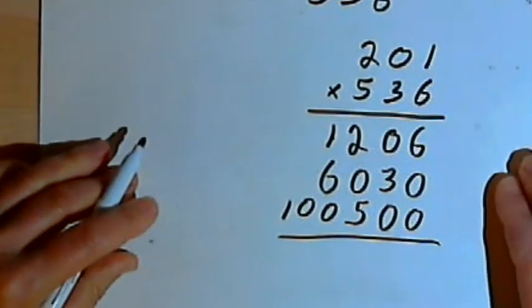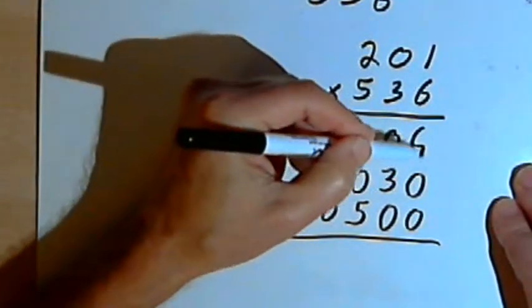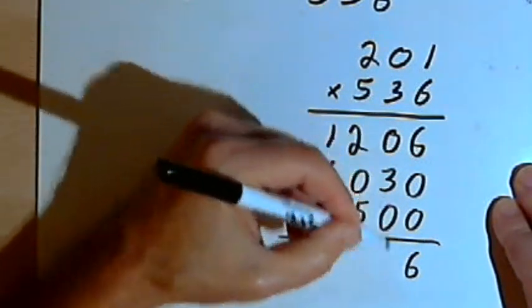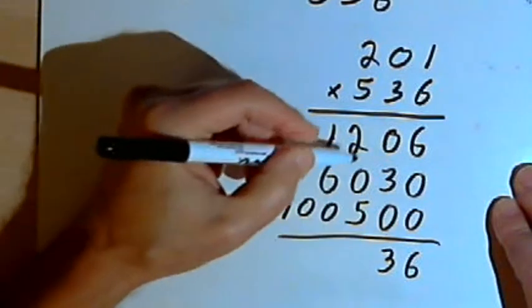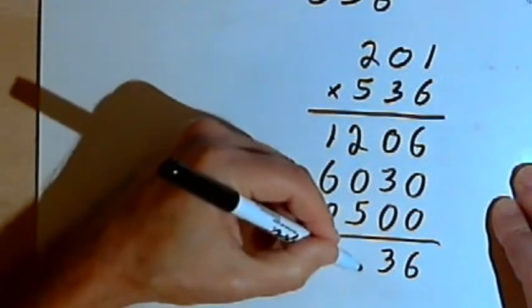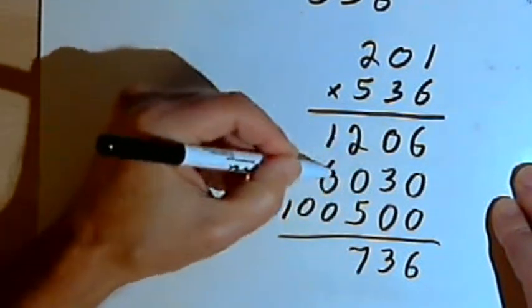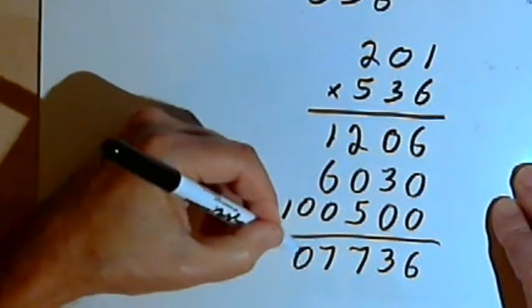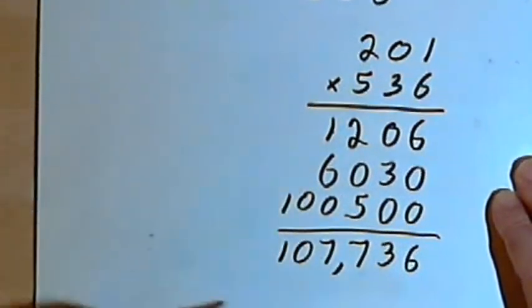And now I can add those partial products. 6 plus 0 plus 0 is 6. 0 plus 3 plus 0 is 3. 2 plus 0 plus 5 is 7. 1 plus 6 plus 0 is 7. And I've got a 0 and a 1, so my answer is 107,736.